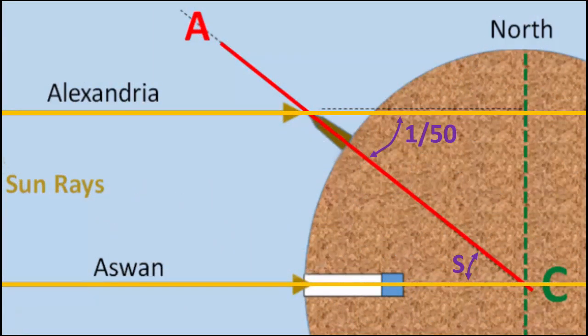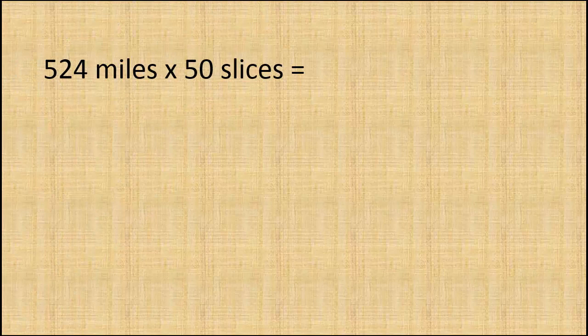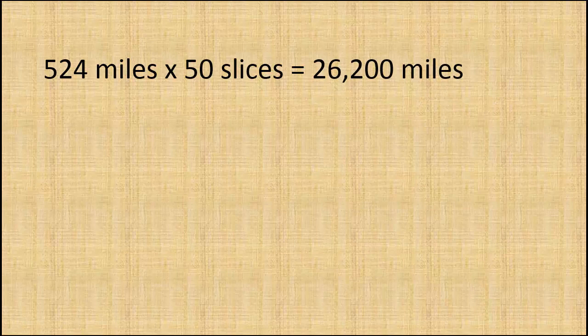Using Euclid's proof that alternate interior angles of a transversal across parallel lines are equal, he then knew that the central angle between Aswan and Alexandria was 1/50th of a full circle, and the distance along the Earth was 524 miles. Eratosthenes would have reasoned that if one pizza slice of angle 1/50th was 524 miles along the outer edge, then two pizza slices fitted together would have a total central angle of 2/50th of a full circle, and the distance would be doubled to 1048 miles. So, using this method, he would have multiplied the 524 miles by 50 to estimate the distance around the entire Earth. That equals 26,200 miles around the Earth.